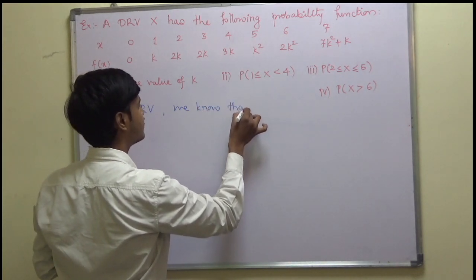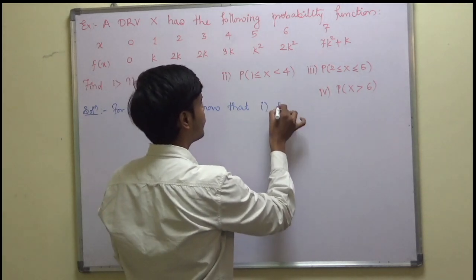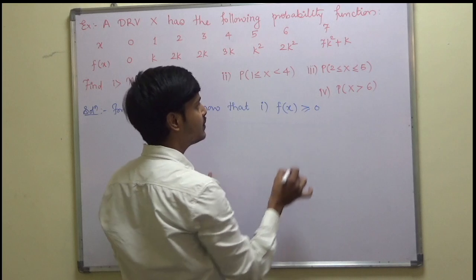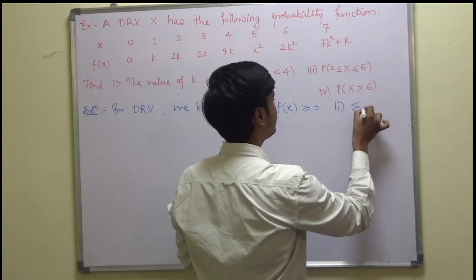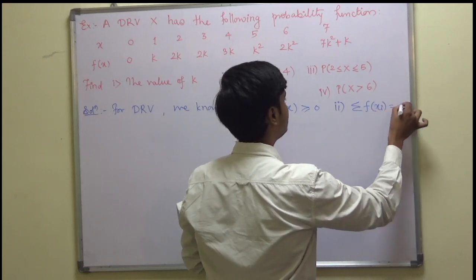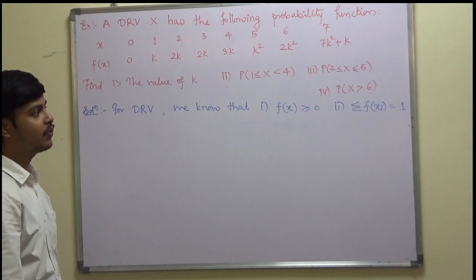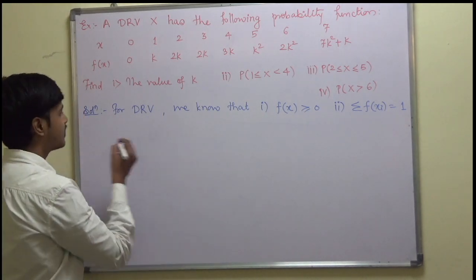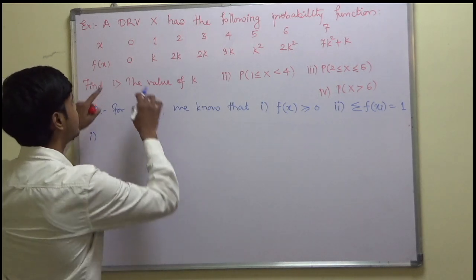Ask yourself what we know. The very first thing is all the probabilities should be greater than or equal to 0. And the second thing is the sum of the probabilities is equal to 1.